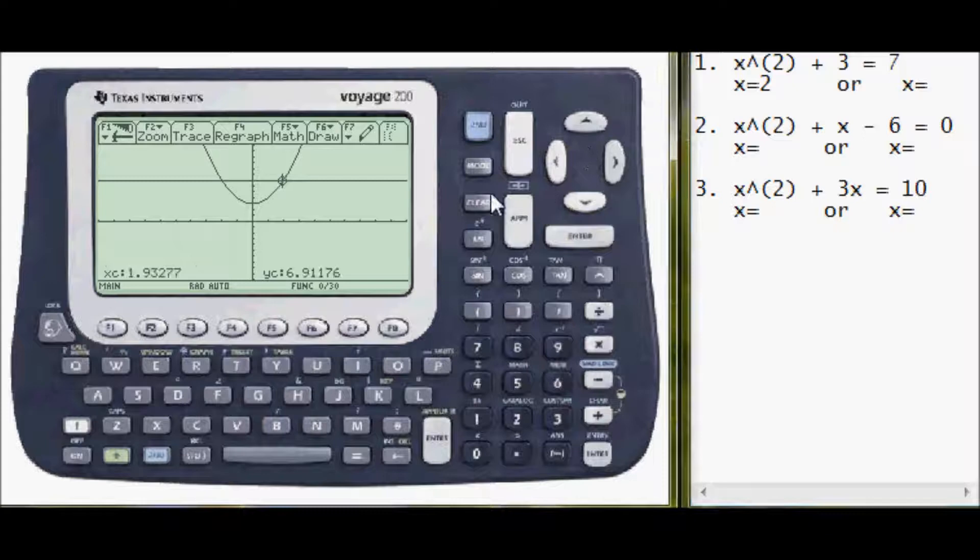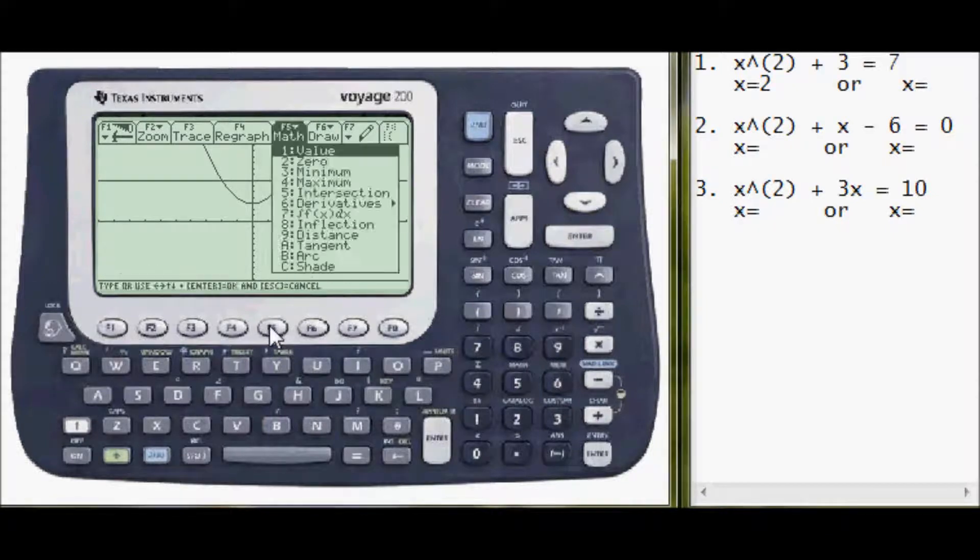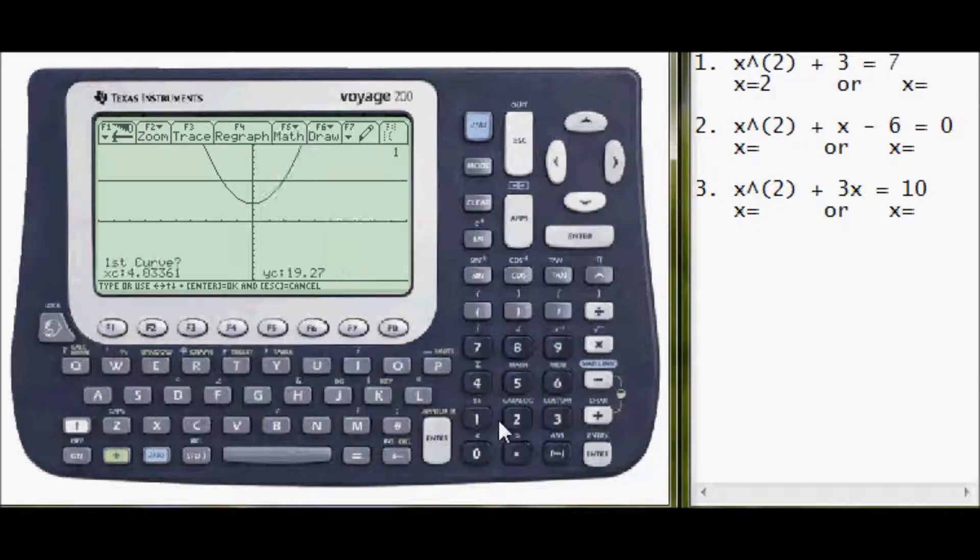And a similar method for the other intersect. Press F5, number 5 for intersect. First curve, so I'm going to scroll back down so I can see what it's actually selecting. Okay, first curve, second curve, lower bound. I want to be on the left of this intersect. One, two, three, four. So I'll do negative 4. And then to be on the right, I'll enter 0. And the intersect is at x equals negative 2. So I'll enter that.